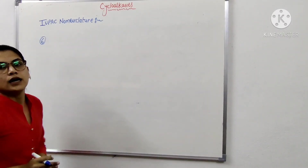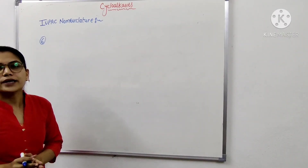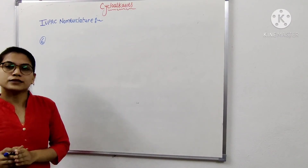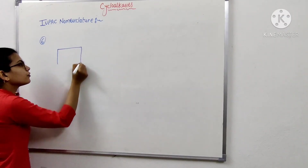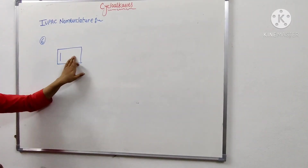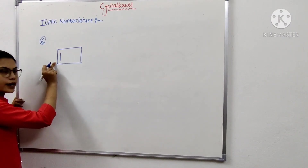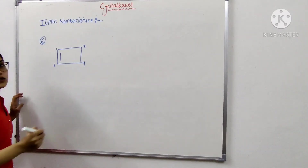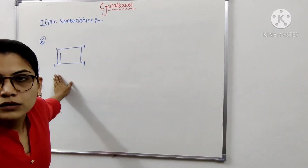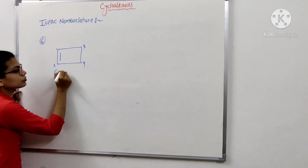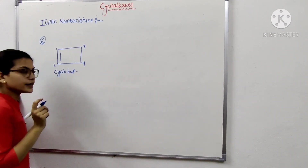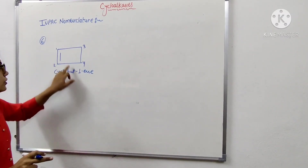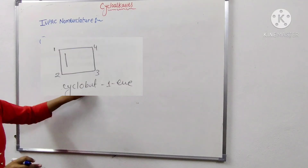The next point (sixth point) is: if a multiple bond is present in the ring, numbering is done in such a way that the multiple bond gets the lowest number. In this structure, a four-member ring is present with a double bond (pi bond) between two carbons. Numbering: 1, 2, 3, and 4. So it is known as cyclobutene (cyclohexene-1).